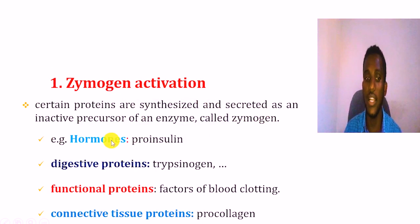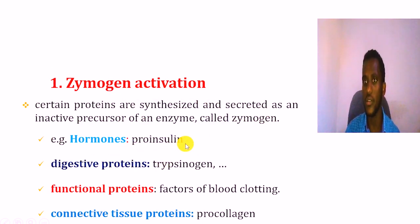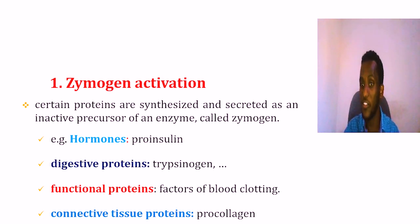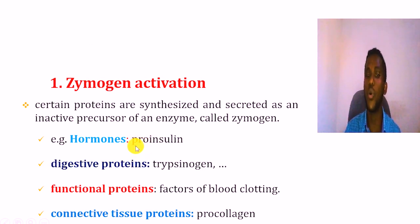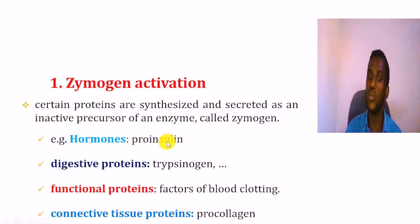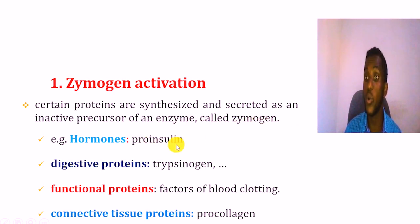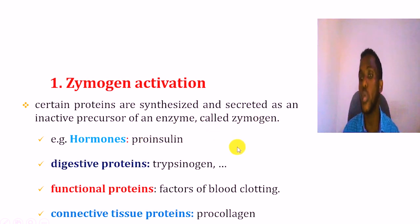This is known as pro-insulin. The normal hormone is insulin — this is the form of insulin — but it is initially an inactive protein. Pro-insulin is the inactive form; insulin is the active form.